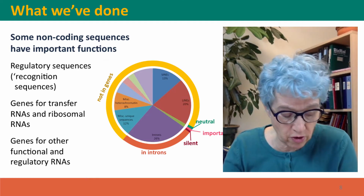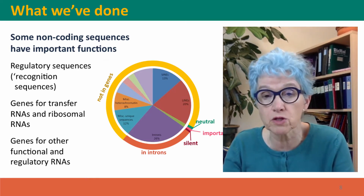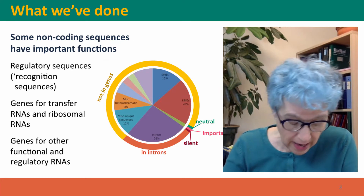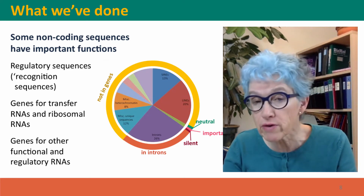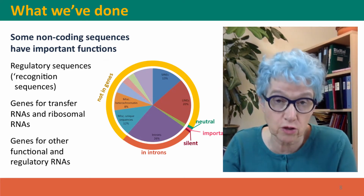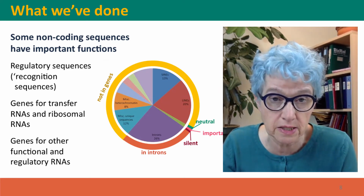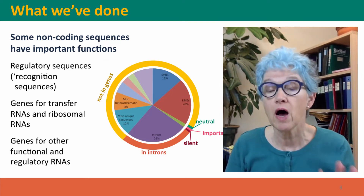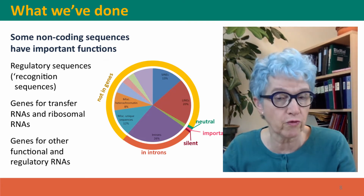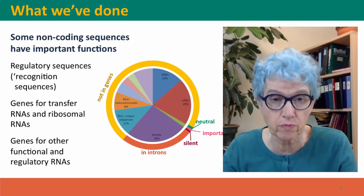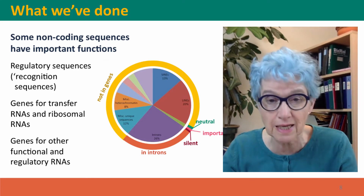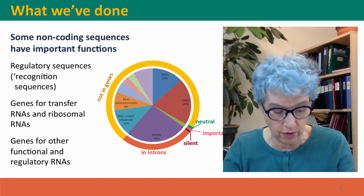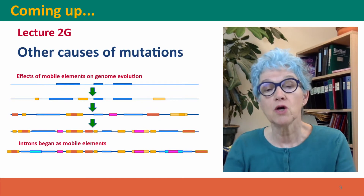Genes for the transfer RNAs and ribosomal RNAs that function in protein synthesis, and genes for other kinds of functional and regulatory RNAs. Now this isn't an exhaustive list — there are lots of other sequences that don't code for protein but have important functions in DNA, but we don't have time to talk about all of them.